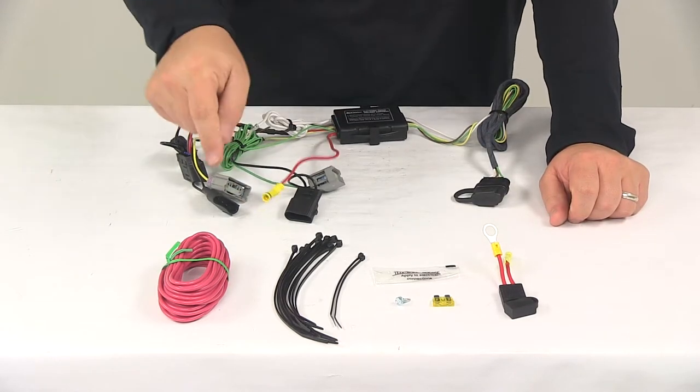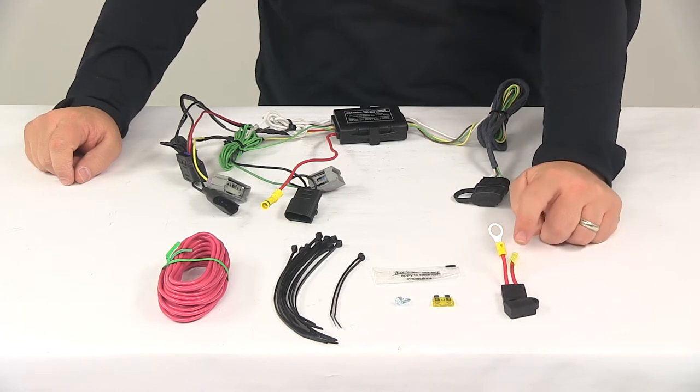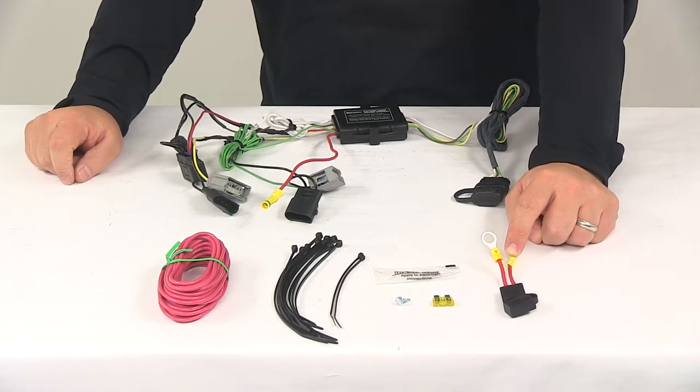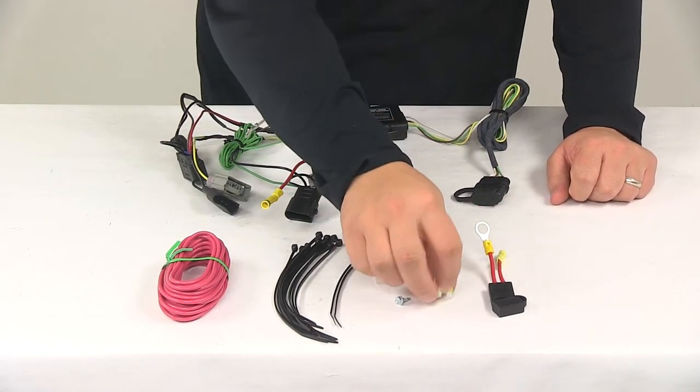So this wire gets connected to the bundle. The other end of the bundle gets connected to the end of the fuse holder that has the buck connector pre-attached to it. And then again, the ring terminal side goes to the positive post of the vehicle battery.